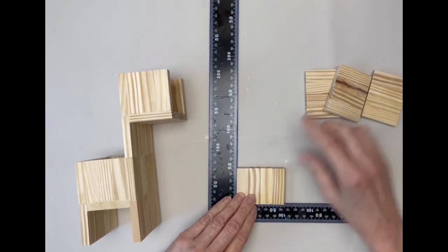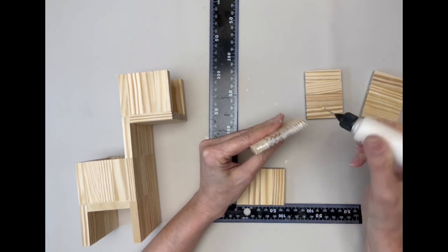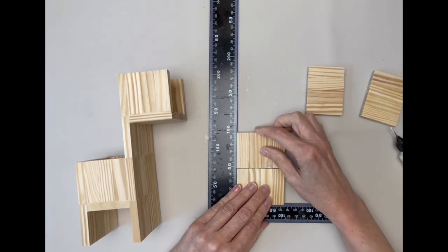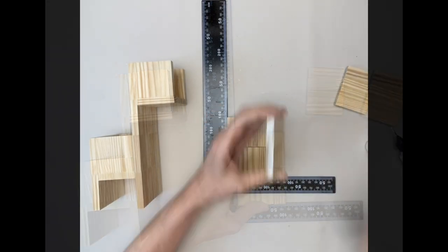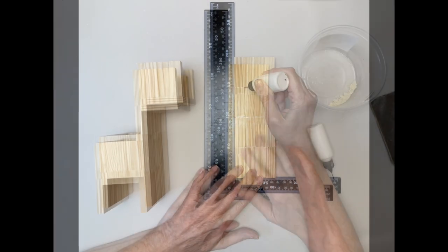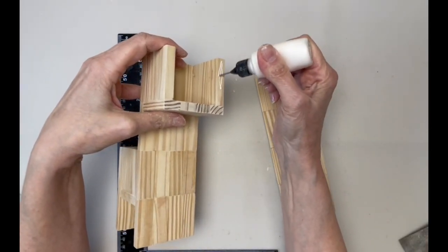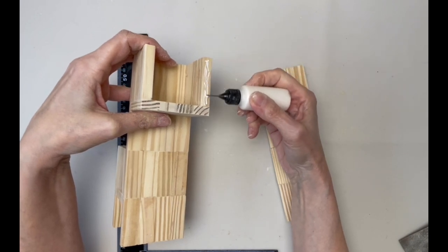I glued four, four-block sections end to end. Again, I filled in the gaps. I then glued the four-tier side to the open box.